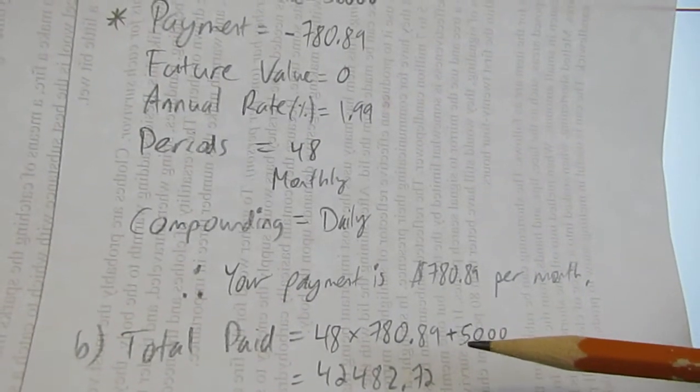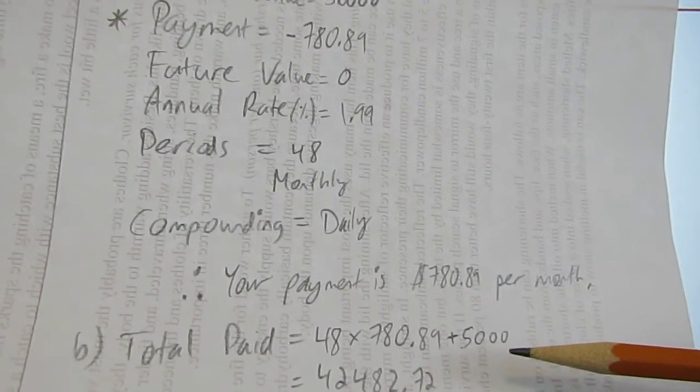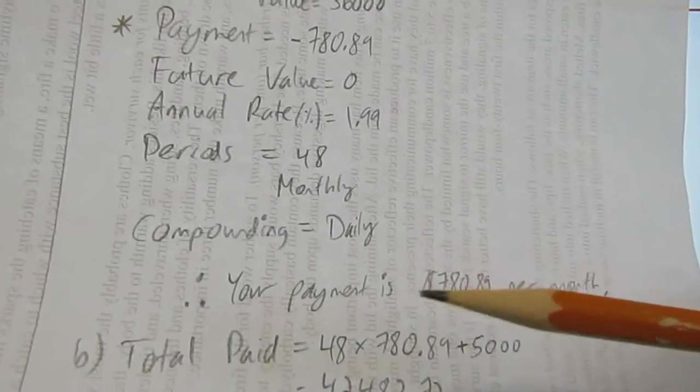That's a little different because don't forget to add on this down payment. How do you calculate your total interest?